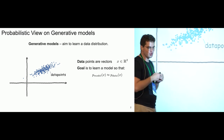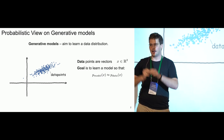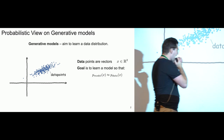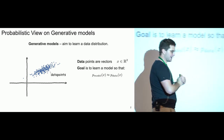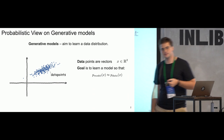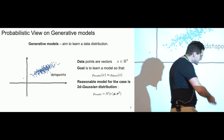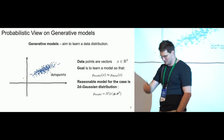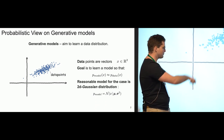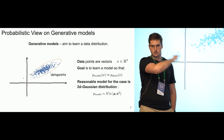All these points come from a true data distribution, and we have no access to this true probability density function. We want to learn a model to approximate it. In this case, a Gaussian distribution is very reasonable — it's just a normal distribution, maybe with a diagonal or full covariance matrix.